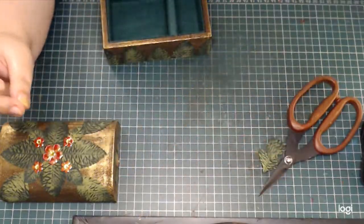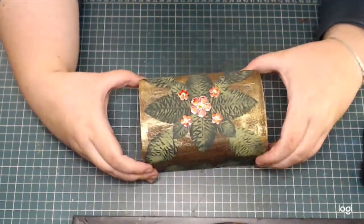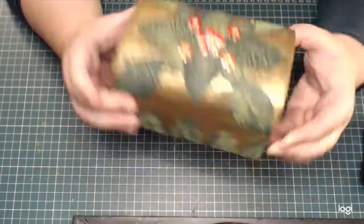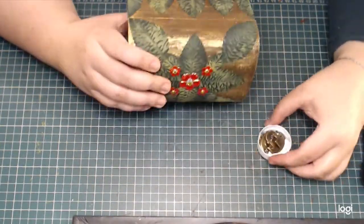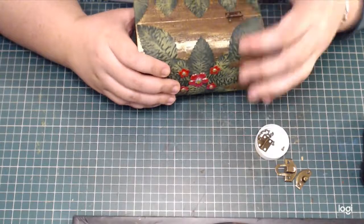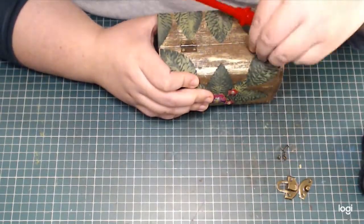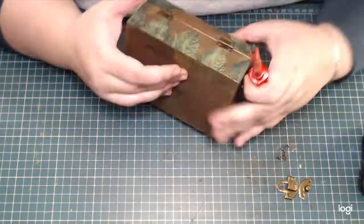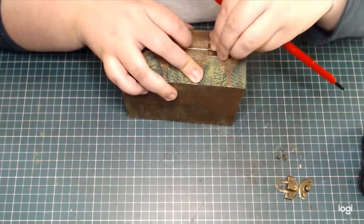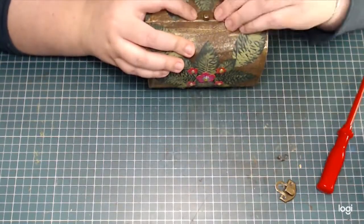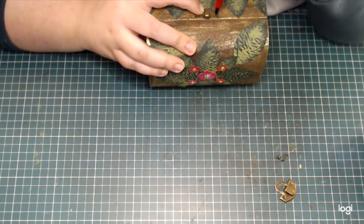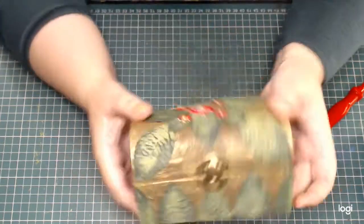And all that remains now is to reattach the hinges and the closure. This time it was really nice because the box came with the hardware that was this sort of old brass color. That was really nice and it went with the gold.